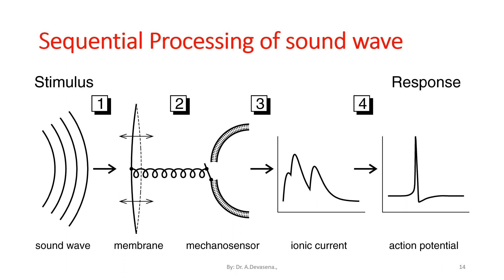The sound wave is generated and hits the membrane present inside the human ear. Inside the ear, we have the mechanosensor, which converts the sound wave to ionic current. From the ionic current, an action potential is generated. This action potential is passed to the auditory nerve, and the auditory nerve sends this action potential to the human brain.